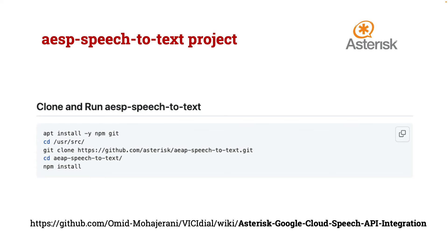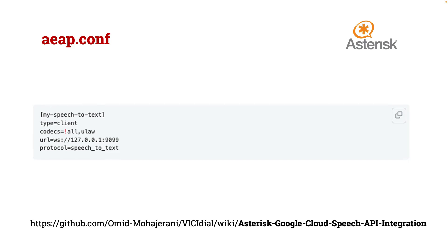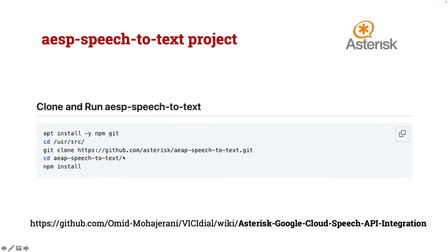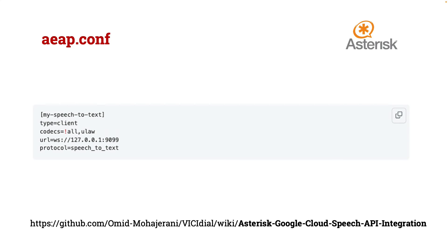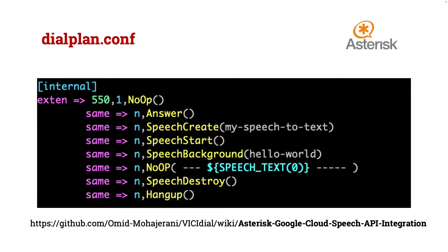The next step is to tell Asterisk where the script we just installed is located. Go to /etc/asterisk and edit the aeap.conf file. If you don't have that file and you're on Asterisk 18 or above, just create it. Copy and paste the configuration shown here: we specify port 1999, which is the port our Node.js code will listen on, set the protocol to speech-to-text, the type to client, and the codec to ulaw.